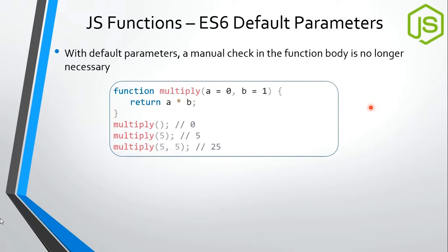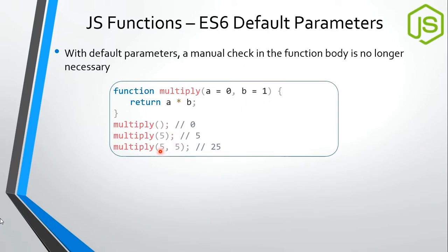In ES6, instead of checking for undefined, we can initialize parameters directly in the function declaration. If parameters are not passed when calling the function, they will take their default values. So when calling multiply with no arguments, it uses defaults; with one argument, a receives that value and b takes its default; with two arguments, both are received and the result would be 25.